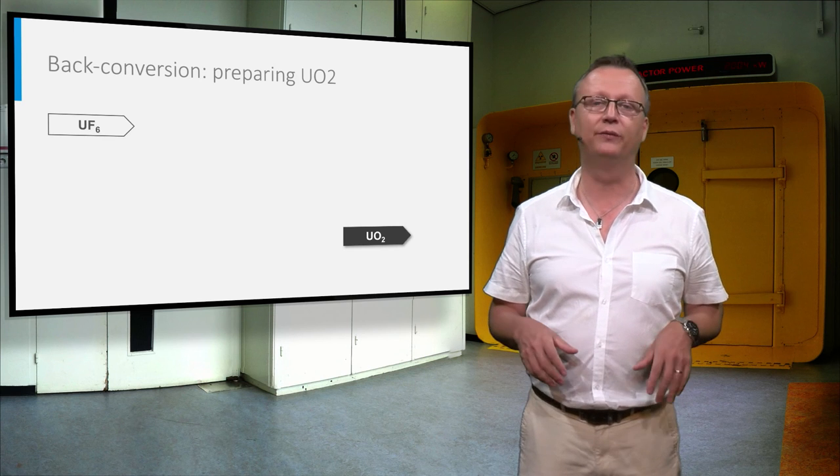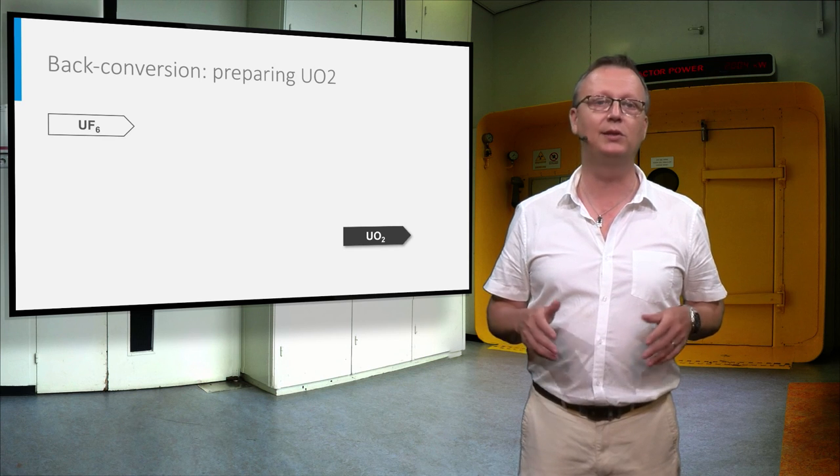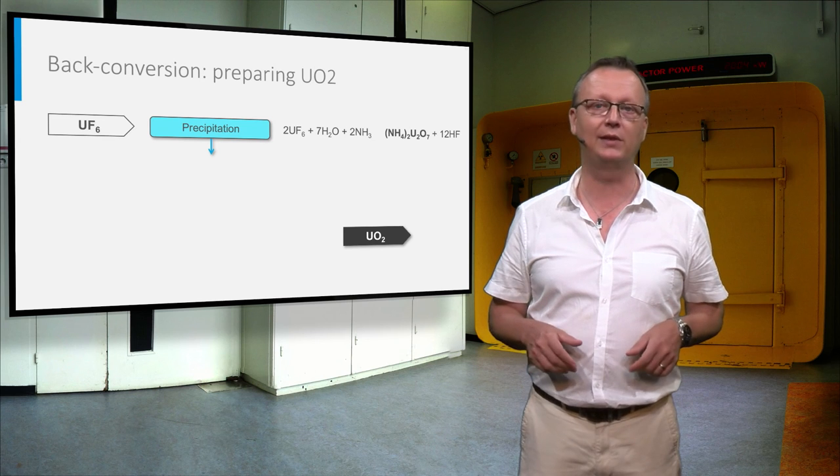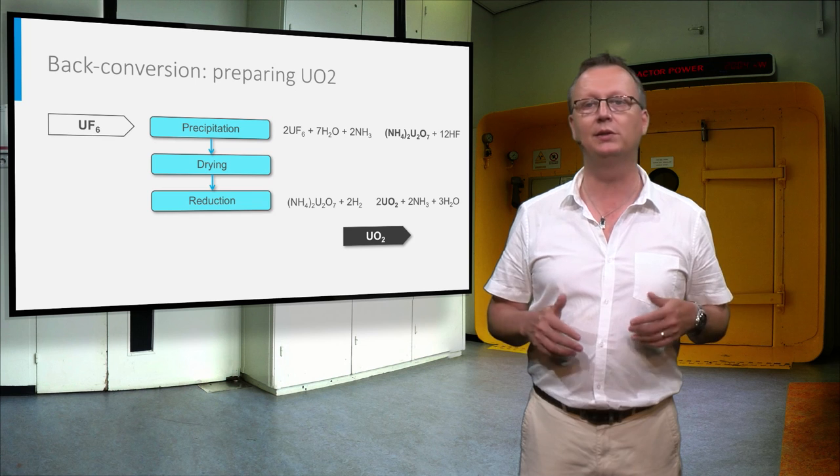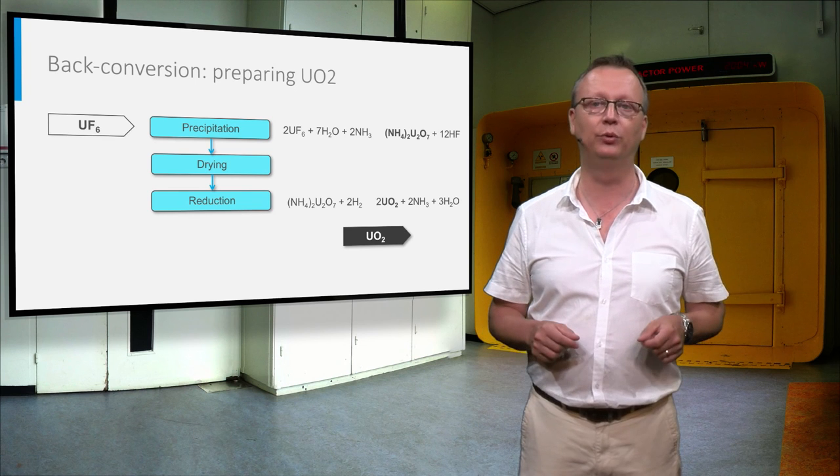The UF6 must now be converted back to UO2. This is done by reacting the UF6 with gaseous water and ammonia to form ammonium diuranate. This is then dried and reduced in hydrogen to UO2. The product is then milled to get a uniform powder quality.